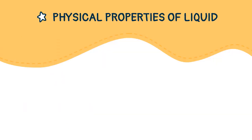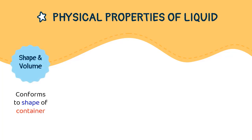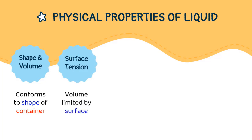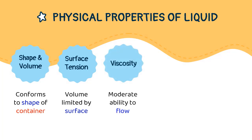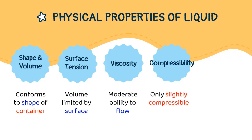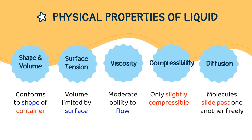There are 5 physical properties of liquid we are going to learn in this subtopic. First, shape and volume — liquid conforms to the shape of its container. Second, surface tension, which indicates the volume of a liquid is limited by the surface they have. Third, viscosity, which tells us the ability for a liquid to flow is moderate. Then, compressibility — since the shape and volume depend on the shape of the container, liquid is only slightly compressible. And lastly, the diffusion rate, where molecules manage to slide past one another freely.